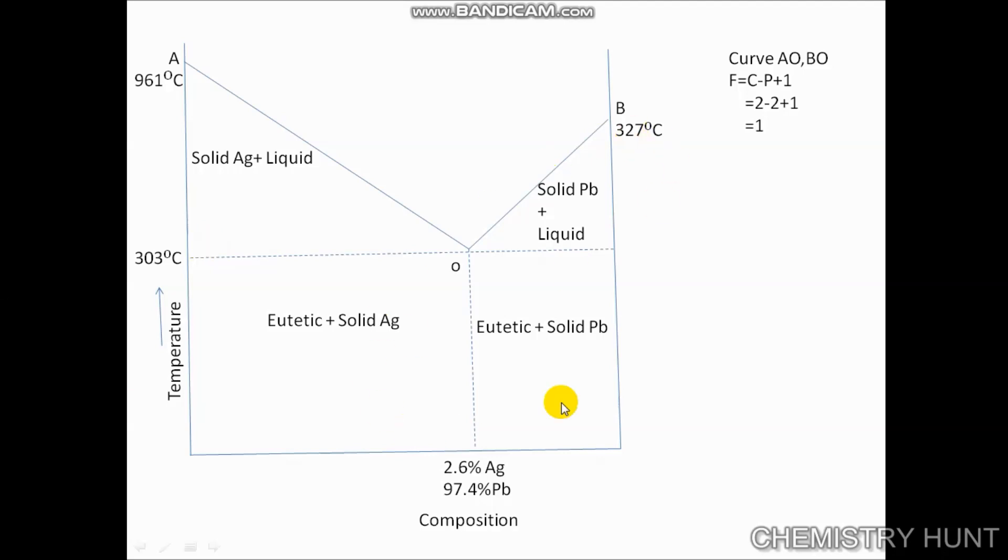At this temperature we see this composition. For this, we write F = C - P + 1, where the components are 2, but the phases are 3. So the degree of freedom is 0, and we say it is non-variant.